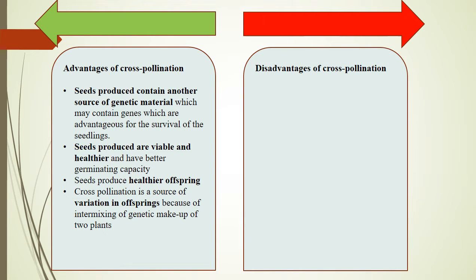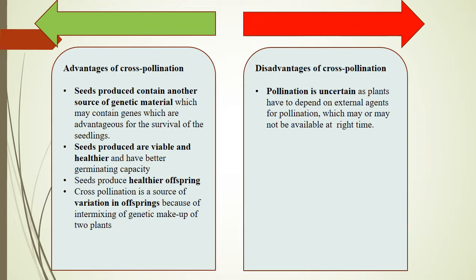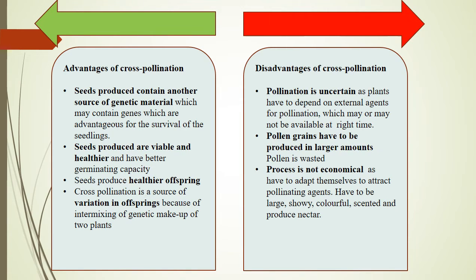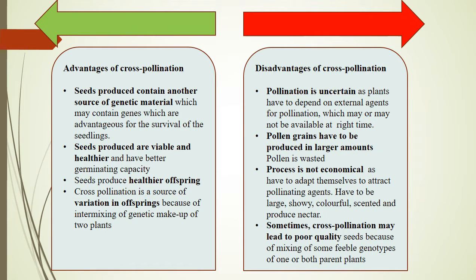Disadvantages of cross-pollination: Pollination is uncertain because plants have to depend on external agents which may not be available at the right time. Pollen grains have to be produced in larger amounts, so a lot of pollen is wasted. The process is not economical because flowers have to adapt to attract pollinating agents — they have to be large, showy, colorful, scented and produce nectar. Sometimes cross-pollination may lead to poor quality seeds because of mixing of some feeble genotypes of one or both parent plants.